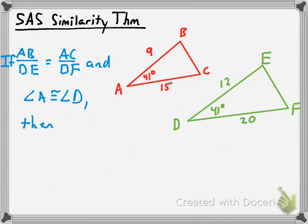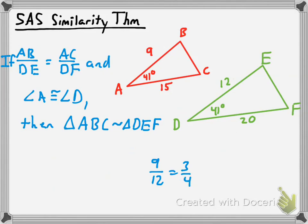If you know that those two pairs of sides are proportional and their included angles are congruent, we can say that triangle ABC is similar to triangle DEF. The ratio of AB to DE is 9 to 12, which equals 3/4. The ratio of AC to DF is 15 to 20, which is also 3/4. And of course, the two included angles of those pairs of proportional sides are congruent to one another. That's the SAS similarity theorem.